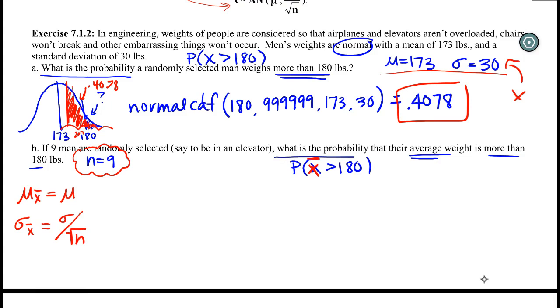We have to deal with the fact that it's a lot harder to roll nine man dice and have them weigh more than 180 as an average than it is to just roll one man dice and have them weigh more than 180. So we need to decrease our standard deviation because the average has got to be closer to what we expected. So the average here is 173. Our standard deviation is going from 30 to 30 divided by the square root of nine, which is just 10.